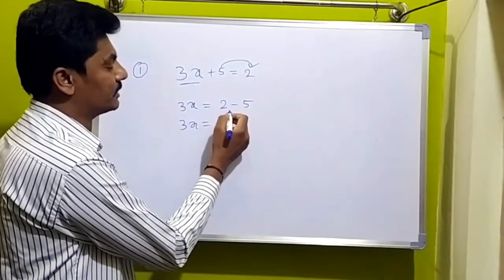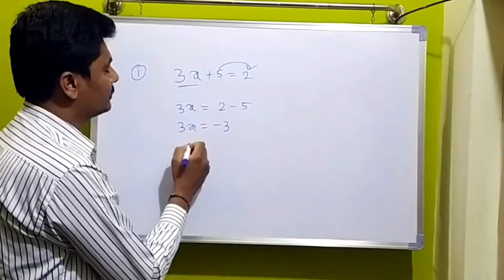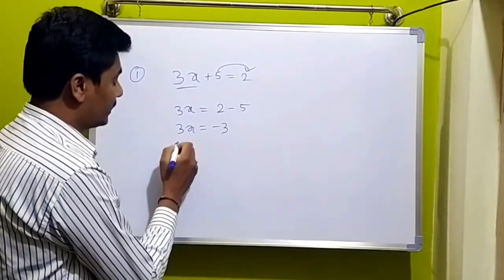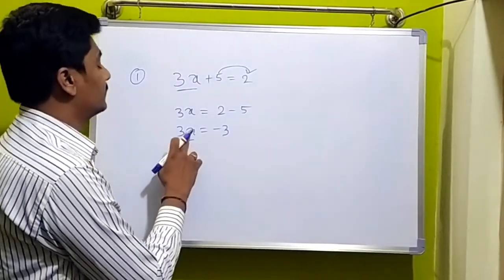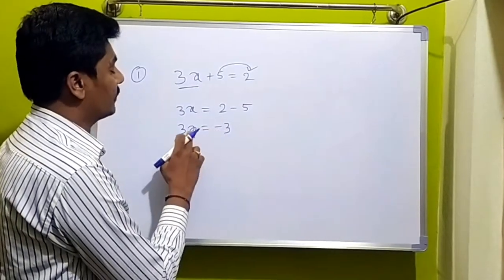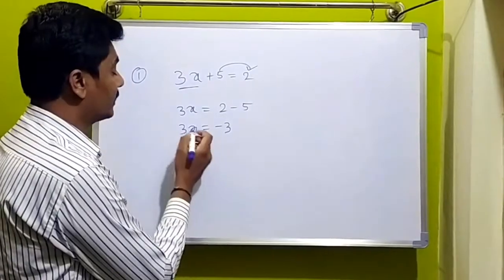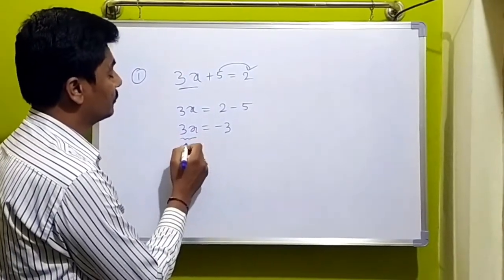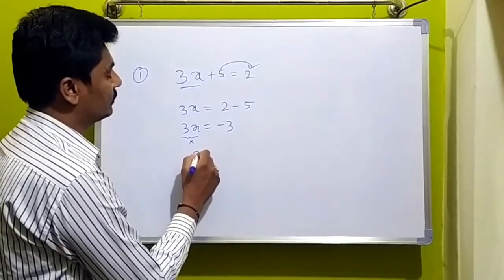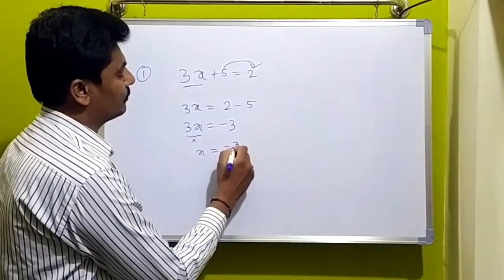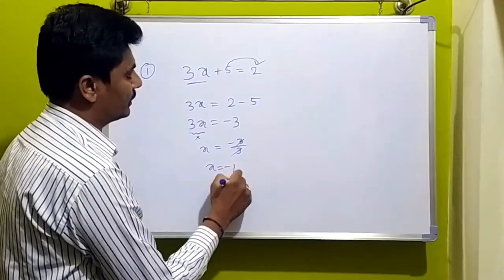So, 3x is equal to 3 minus 3. So, x is equal to minus 3 divided by 3. So, x is equal to minus 1.